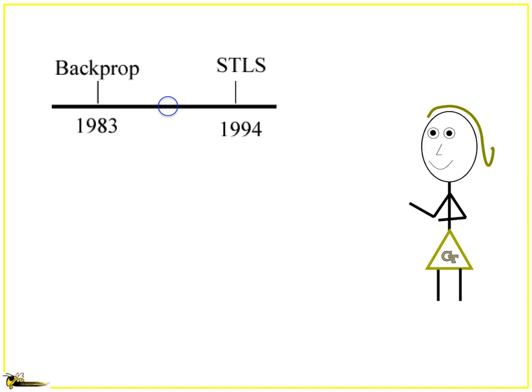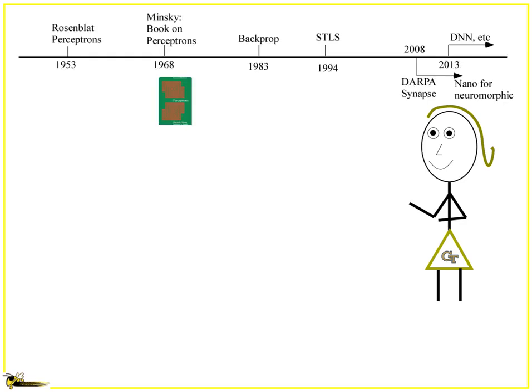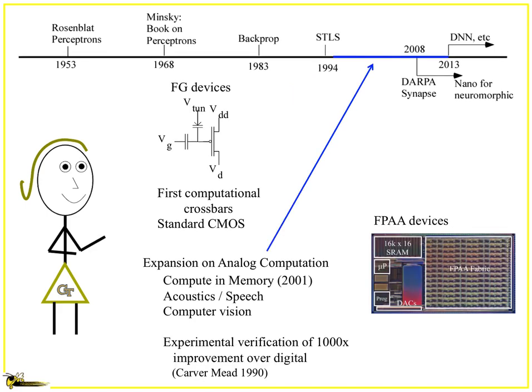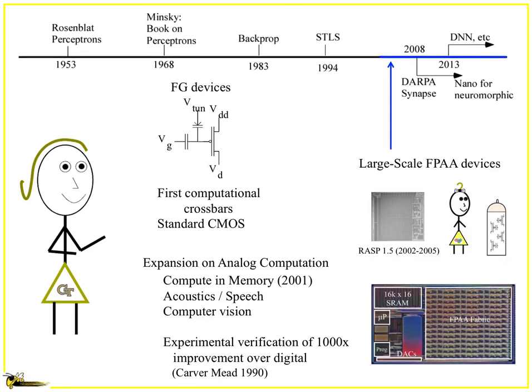Looking back 30 years ago, things changed. You had this whole concept of single-transistor learning synapses, where you had floating gate devices. That changed the whole sense of analog computation, where you had computing and memory nearly two decades ago. You had discussions in acoustics, speech, and computer vision — all from these very first crossbar devices.